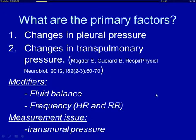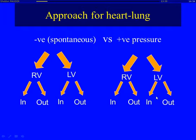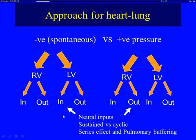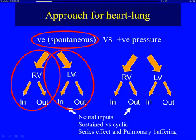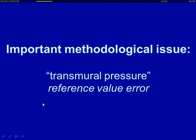That's the importance of transmural pressure. The subject is complicated, but if it's broken down into parts, it actually isn't so bad. There are negative breaths and positive — I'm going to be just dealing with the negative. You have to think of the effects on the right side and left side, and then think of the in and out. These are modified somewhat by neural inputs, sustained versus cyclic effects, and then the series effect and something I've called pulmonary buffering. My task today is negative — the effects on the right side and left side, going through the systematic parts on the ins and outs of each.